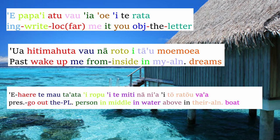The last sentence: E haere te tamau ta'ata i roto i te vai, na ni'a i to ratou va'a. E is a present marker, haere means 'to go' or 'to go out' — similar to the Hawaiian form hele. Te is 'the,' tamau is a plural definite marker, ta'ata is 'person,' i roto means 'in the middle of,' i te vai means 'in the water,' na ni'a means 'above,' to ratou is 'their' in the O form, and va'a means 'boat.' So this means: The people are going into the water above their boat.